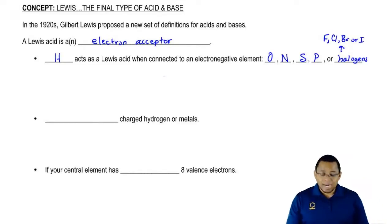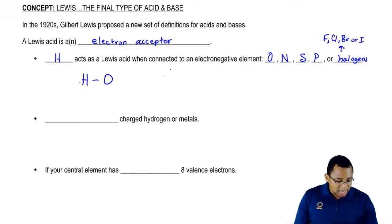Now think about it. Let's think of H being connected to some of these elements. Since all of these elements are more electronegative, they're going to be partially negative. And since H is less electronegative, it's going to be partially positive.